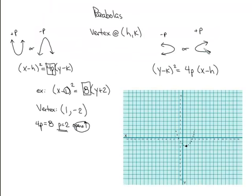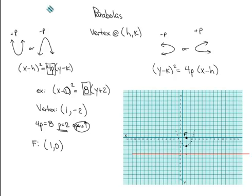If we go up two units to the focus, we go down two units to the directrix. That point (1, −4) is not the directrix because the directrix is a line, not a point. It can't be vertical — that would hit the parabola — so it must be horizontal. It cuts across the y-axis at −4, so the directrix has the equation y = −4. Your directrix is always either y = (number) for horizontal or x = (number) for vertical.